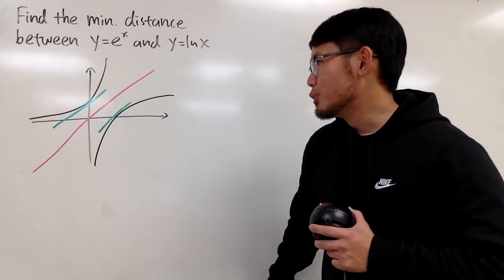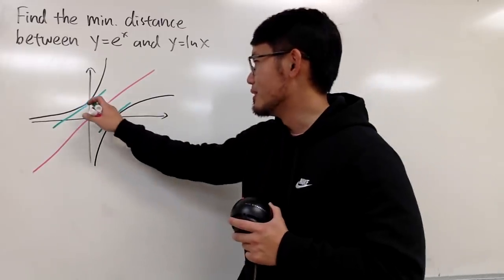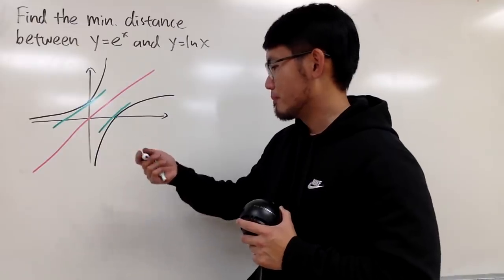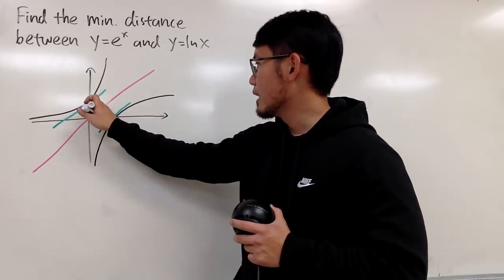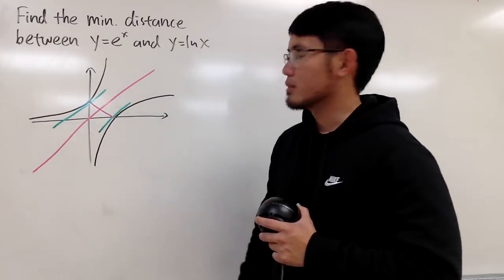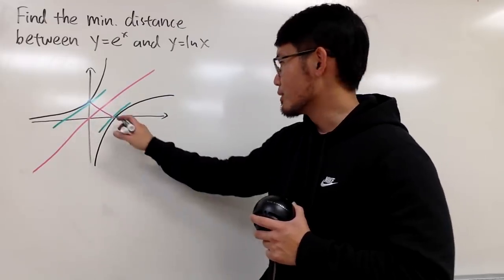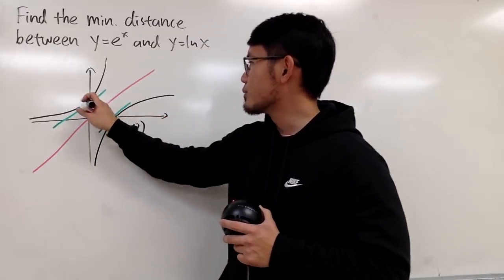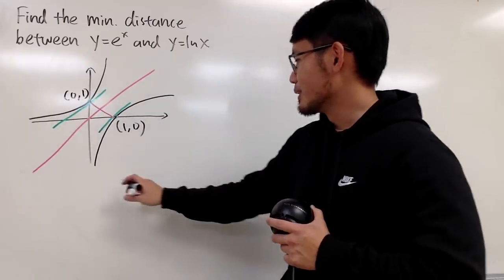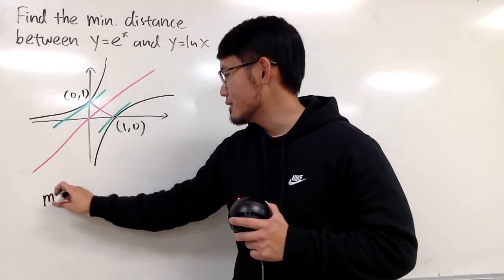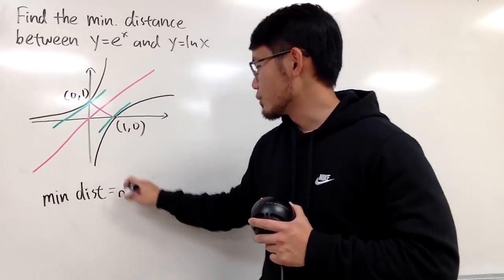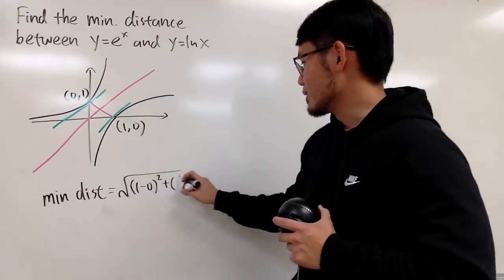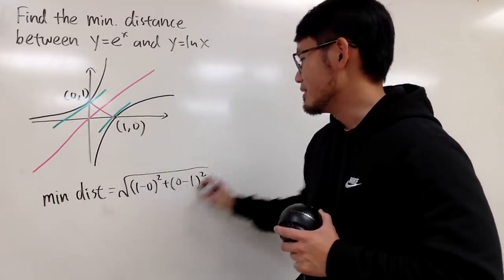The minimum distance between these two curves is just from this point to that. This is (1,0) and this is (0,1). The minimum distance is the square root of (1-0)² + (0-1)², which is just √2.